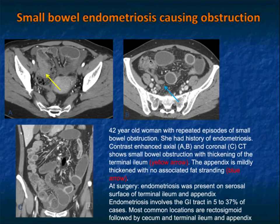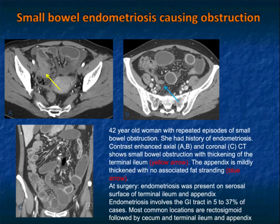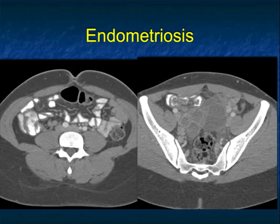Here's another example with small bowel endometriosis with multiple implants on the patient's distal small bowel. There's ascites and proximal bowel dilatation. At surgery, there was endometriosis on the serosal surface of the terminal ileum and appendix. Endometriosis involves the GI tract in 5 to 37 percent of cases, with the most common location being the rectosigmoid, followed by cecum and terminal ileum. It can really simulate processes in the right lower quadrant, including lymphoma and Crohn's disease.